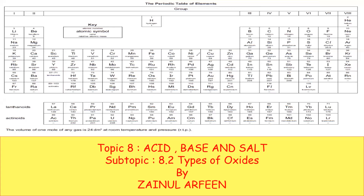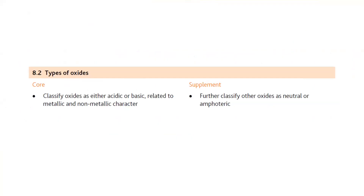Topic 8 is Acid, Base and Salt, and the subtopic is types of oxides. The term oxide means a compound which contains oxygen. When oxygen reacts with another element, it results in the formation of a compound, and we call that an oxide. So what are the different types of oxides?